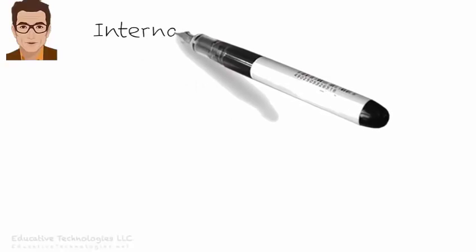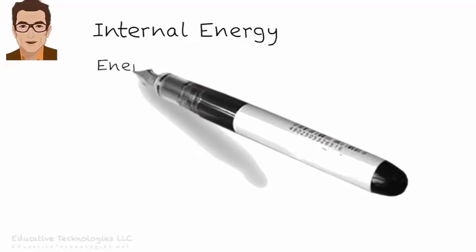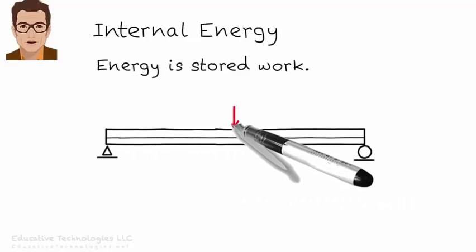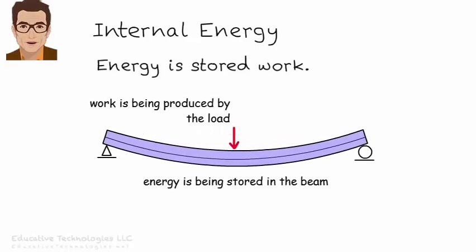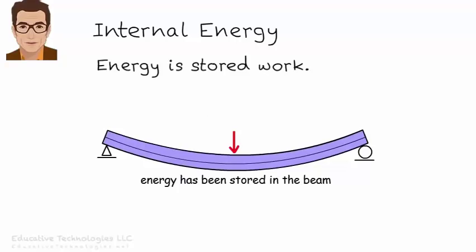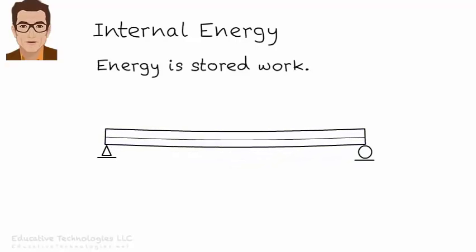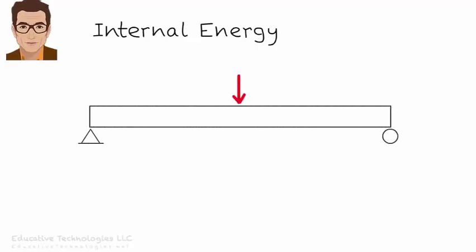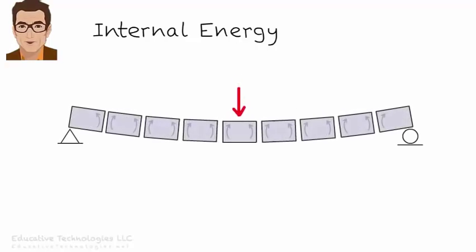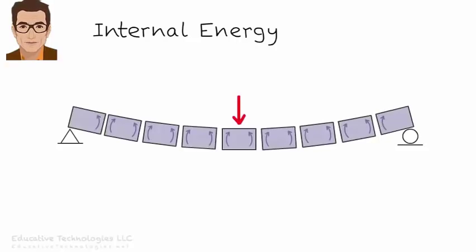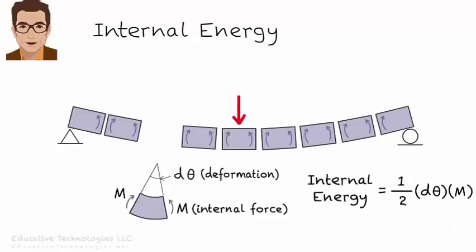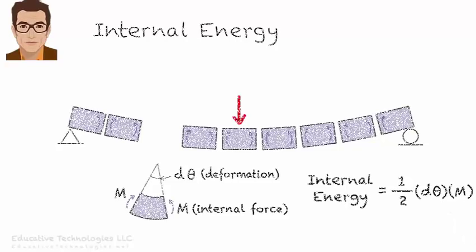Now let's turn our attention to internal energy. What is it? And how do we calculate it? Energy is stored work. Where is the work generated by the load stored? In the member. When we apply the load to the beam, when the beam bends, we are producing work and storing it in the beam as internal energy. When the load is removed, the energy converts back into work, forcing the member to unbend. When a load is applied to a structure, its parts or elements are deformed. Consequently, internal forces develop in each element.